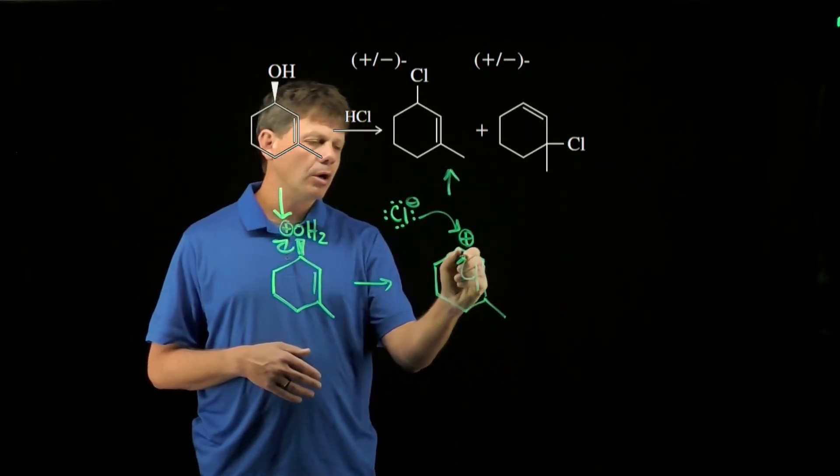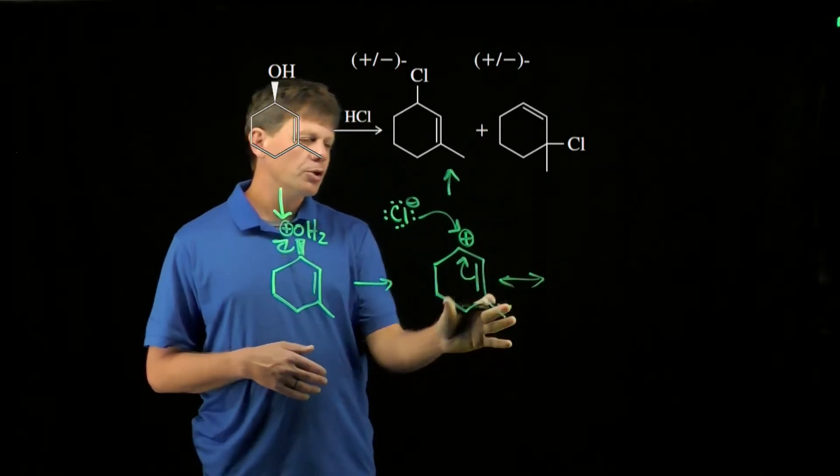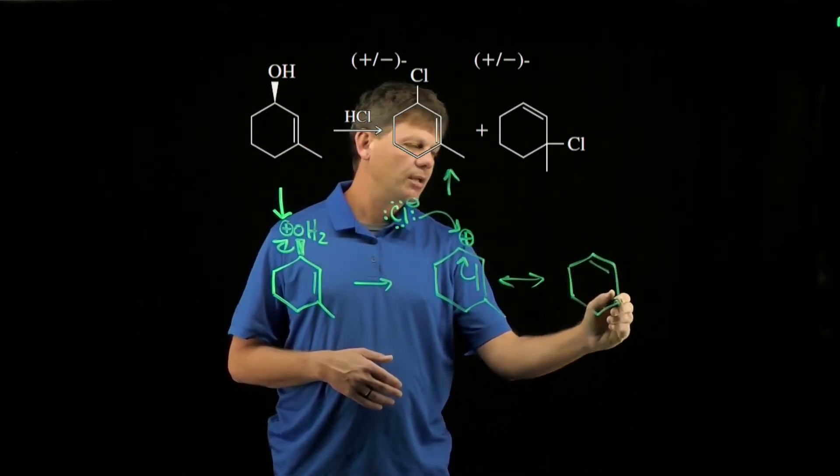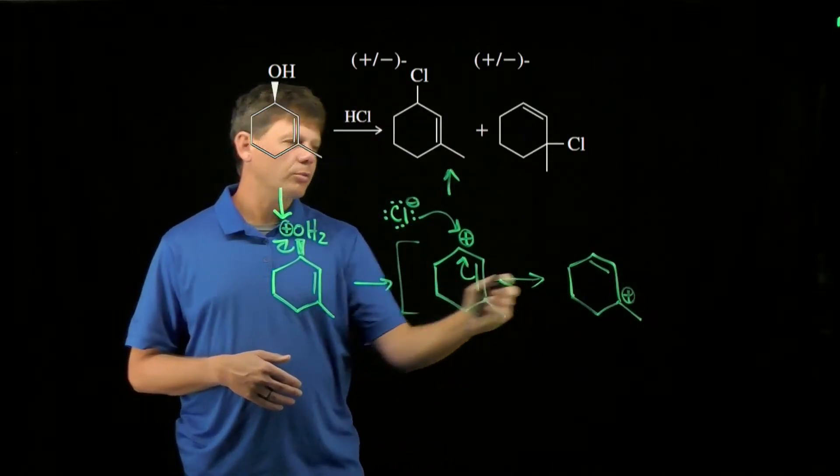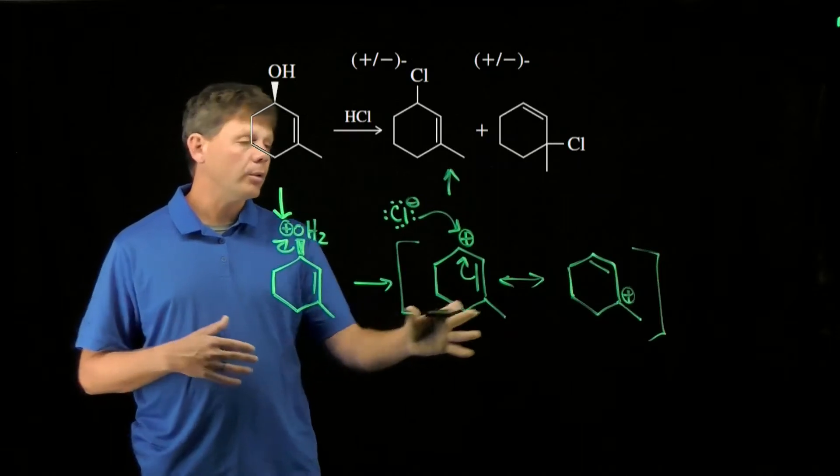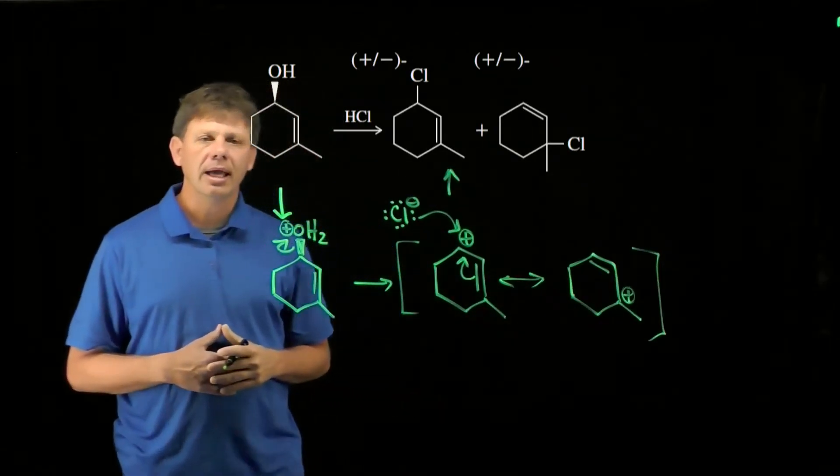We can draw a resonance structure which shows that this molecule is made up of a combination with this one as well. This represents the overall resonance hybrid of what we call an allylic carbocation.